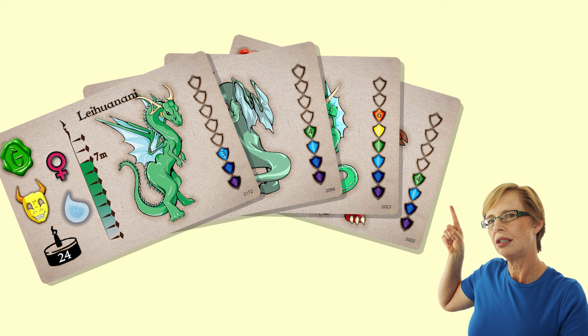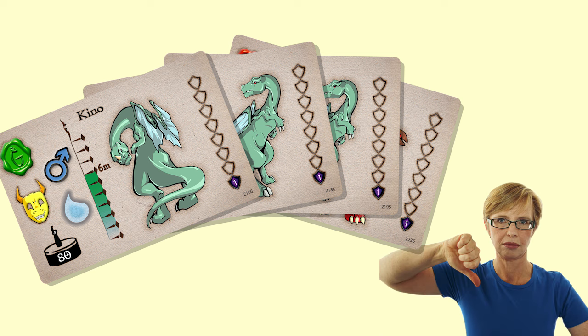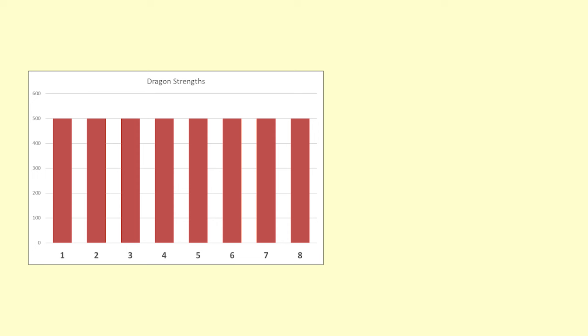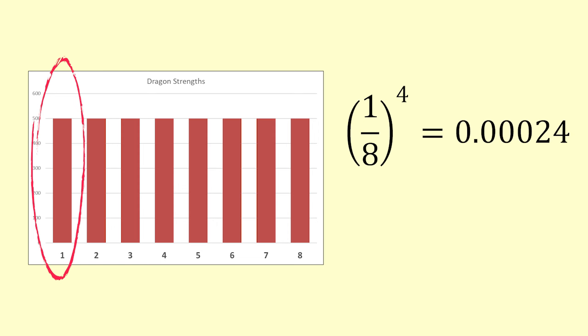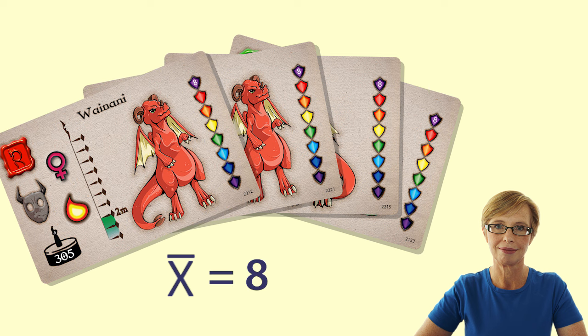How likely is it that the average strength of the four dragons will be one? You are right. It is very unlikely. All four dragons would need to have a strength of one for the mean strength to be one. If there are equal numbers of dragons at each strength then the probability of getting four dragons of strength one is one eighth to the power of four which equals 0.000024 or one chance in 4,096. Similarly it is very unlikely that the mean strength will be eight as all four dragons would need to have a strength of eight.